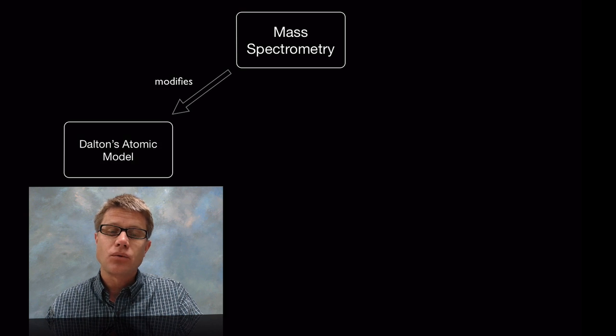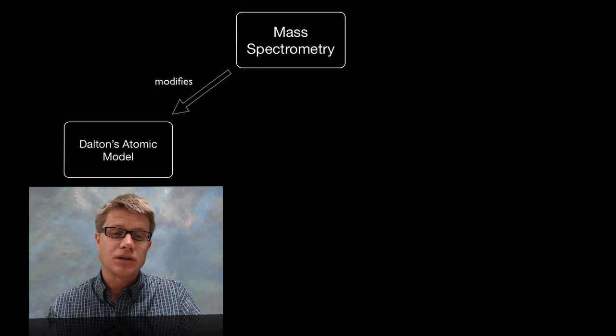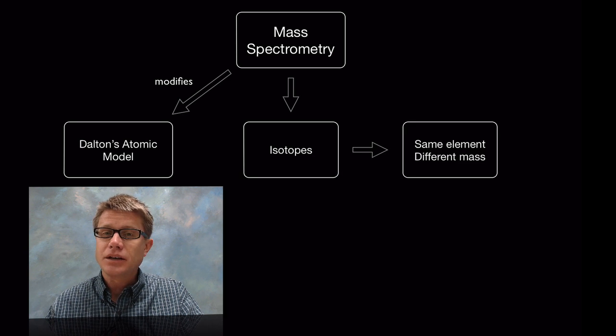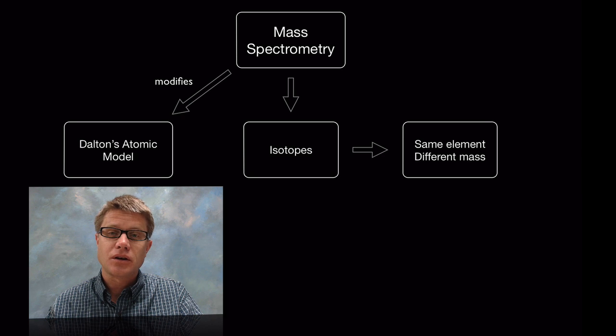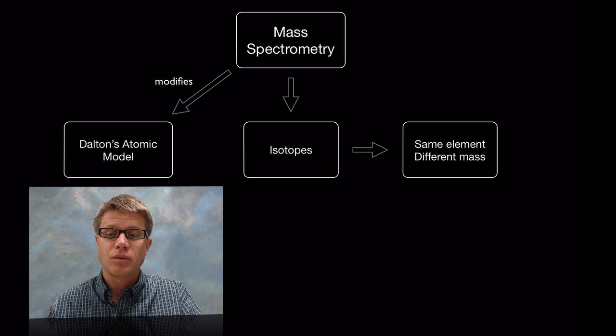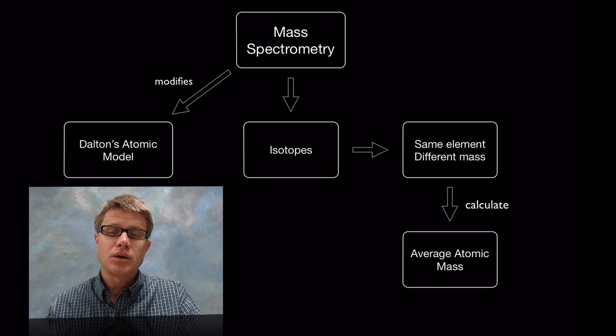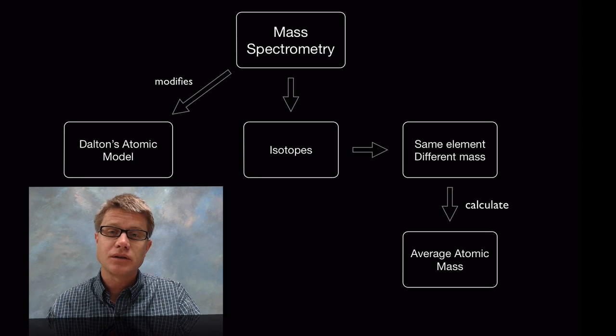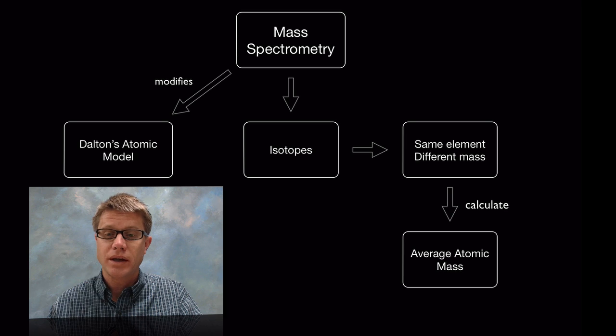What we're really going to focus on in this video is number two, identification of isotopes. Mass spectrometry is a way that we can modify Dalton's atomic theory. We did that through the identification of isotopes around the early part of the 1900s. Isotopes are going to be the same element but with different mass based on the number of neutrons. And what we can do from that is eventually calculate the average atomic mass, which is on the periodic table, sometimes referred to as the atomic weight.